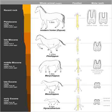Owen remarked: "This evidence of the former existence of a genus, which, as regards South America, had become extinct, and has a second time been introduced into that continent, is not one of the least interesting fruits of Mr. Darwin's paleontological discoveries." In 1848, a study on the fossil horses of America by Joseph Leidy systematically examined Pleistocene horse fossils from various collections and concluded at least two ancient horse species had existed in North America: Equus curvidens and another, which he named Equus americanus, later renamed Equus complicatus.